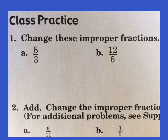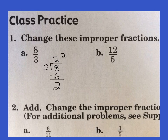How many times does three go into eight? Three goes into eight two times. Two times three is six. We subtract and we get two. So we have two and two over three. I've taken this two and put it on top, this three on the bottom. Our answer is two and two thirds.